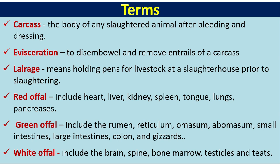Evisceration means to disembowel and remove the entrails of a carcass. Lairage refers to holding pens for livestock at a slaughterhouse prior to slaughtering. Red offal includes heart, liver, kidney, spleen, tongue, lungs, pancreas. Green offal includes the rumen, reticulum, omasum, abomasum, small intestines, large intestines, colon, and gizzards.